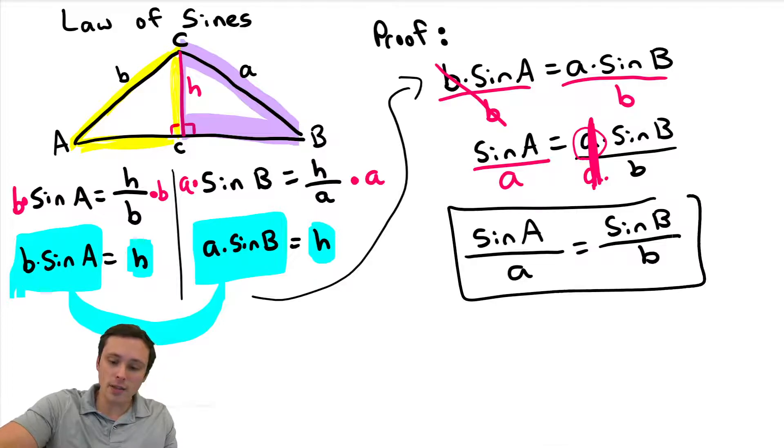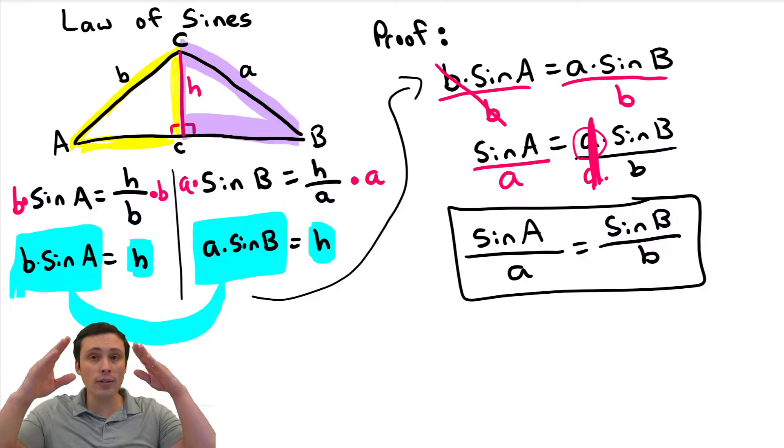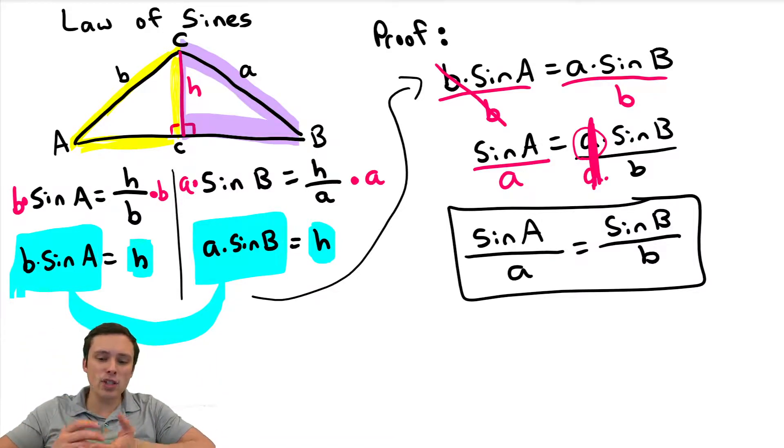That is our law of sines formula, which means we have now not only talked about what is the law of sines, but why is it true? It's true because you could represent that height two different ways, and we can now substitute those values together. Two things equal the same thing, they are equal to each other. And then we just moved it around a little bit to look like two equal fractions here.